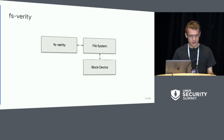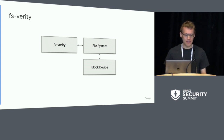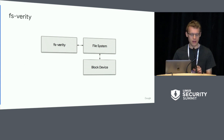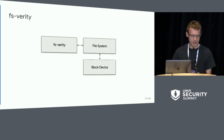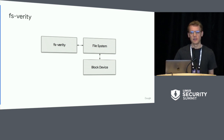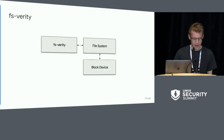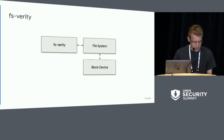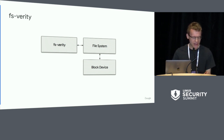Now we get to FS Verity. FS Verity is basically DM Verity for individual read-only files. It's implemented at the file system level — specifically part of the file system — but most of the code is separated into its own module shared by multiple file systems. So far we've implemented EXT4 and F2FS support, but it could be supported by other file systems too in the future. FS Verity is not yet upstream, but we're working on it.